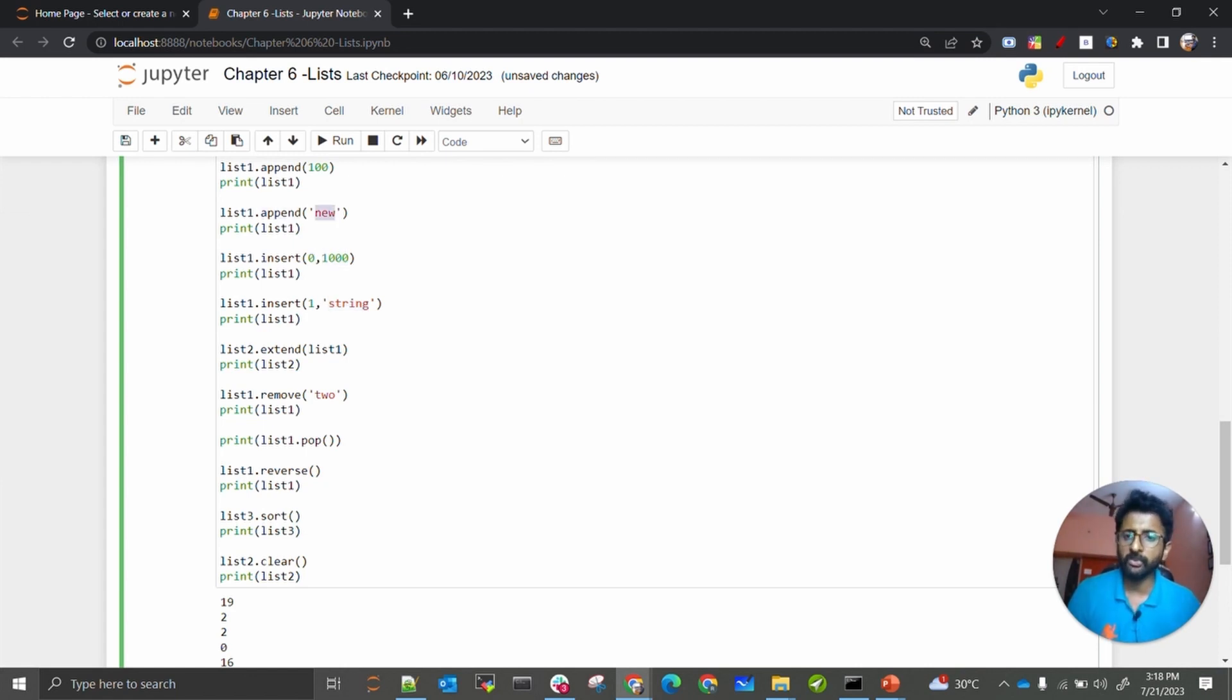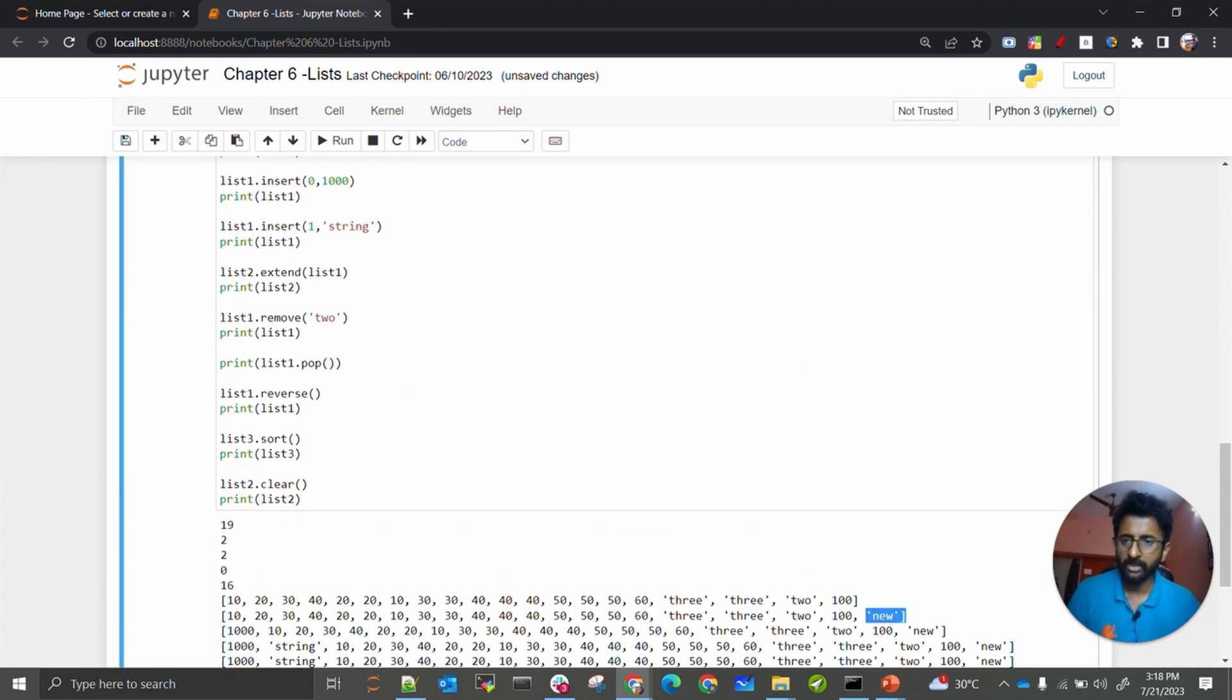We are inserting one at index one, string is inserted at index zero, one thousand is inserted. Append will just add new at the last - here you can see new at the last. And then also we can remove this particular element directly using the remove method.